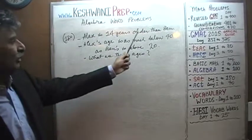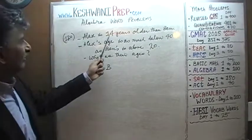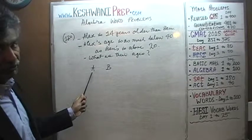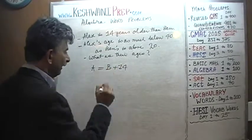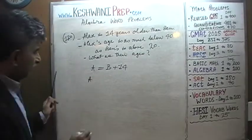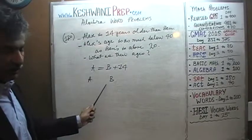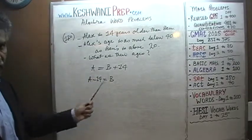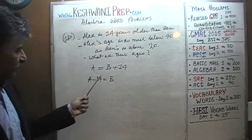The first sentence is: Alex is 14 years older than Ben. So if A represents Alex's age and B represents Ben's age, then A equals B plus 14, because whatever Ben's age is, Alex's age is 14 years more. Equivalently, A minus 14 equals B. These two forms are one and the same — subtracting 14 from both sides gives you the same result. You can look at it either way.